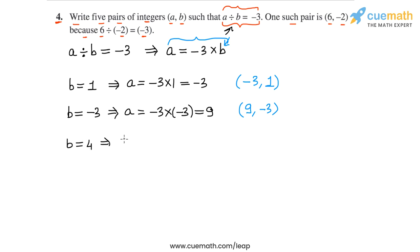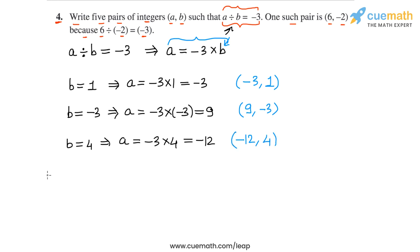Then let's take b equal to 4. For b equal to 4, a will be minus 3 times 4, which is equal to minus 12. So our third pair of integers is a equal to minus 12 and b equal to 4.